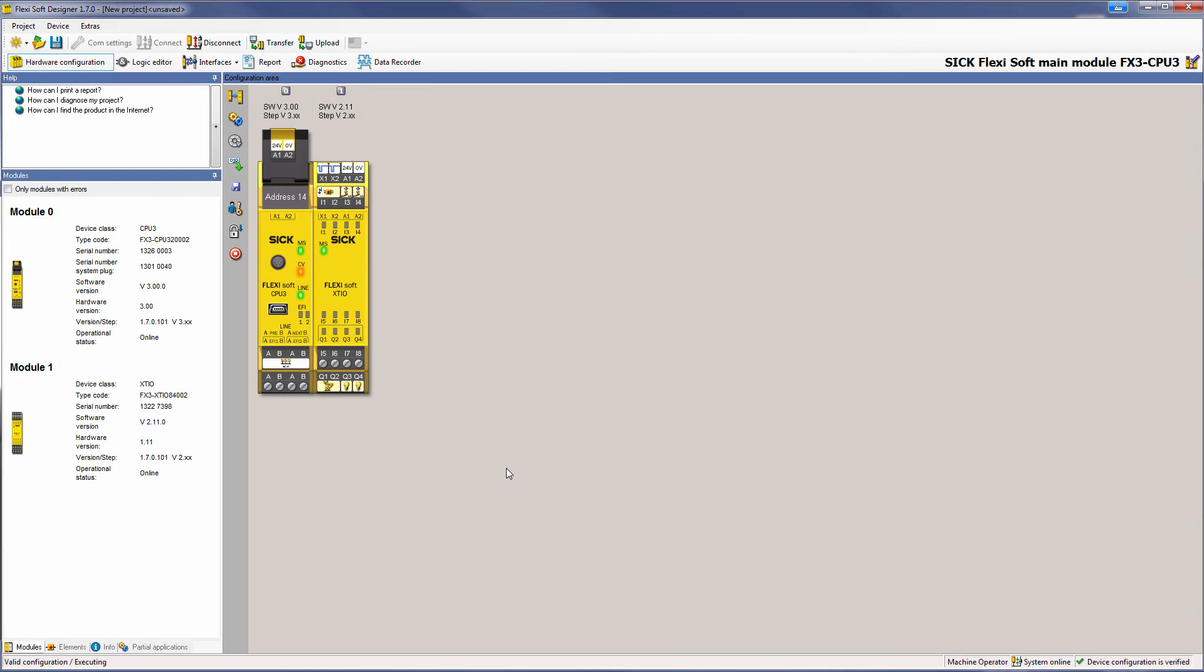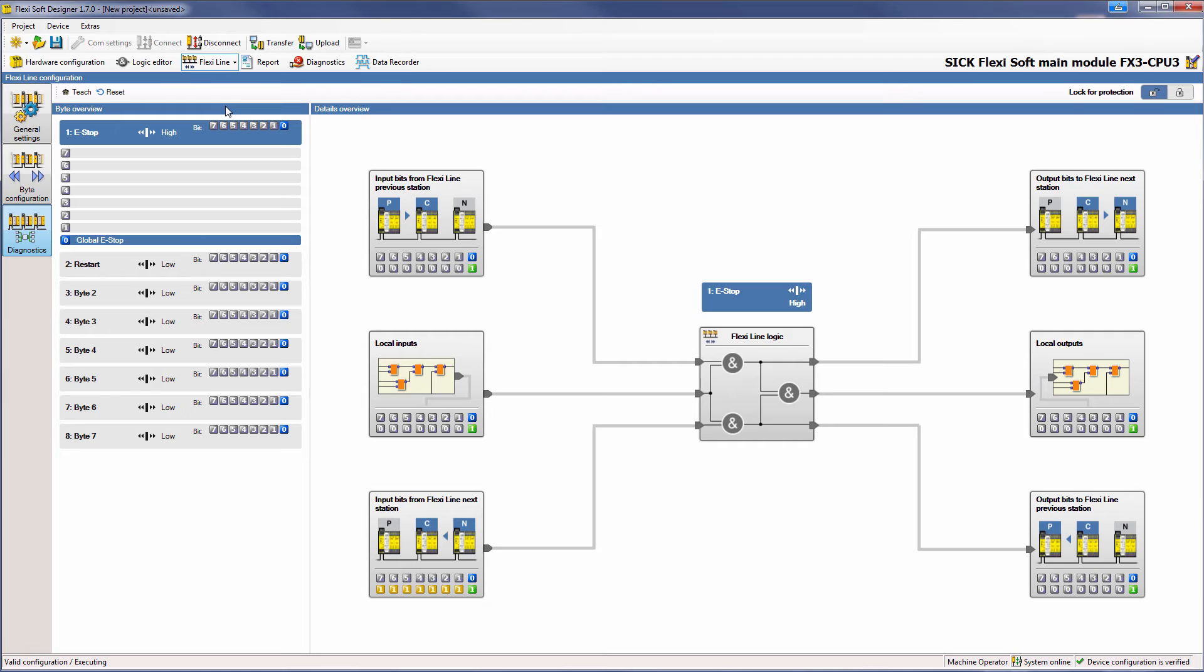Here we see that station 1 is online. And via interfaces and then Flexi-Line, we go to the Flexi-Line configuration window. Here we see a new button on the toolbar in the left corner, the TEACH button. This one only appears when the station is online.